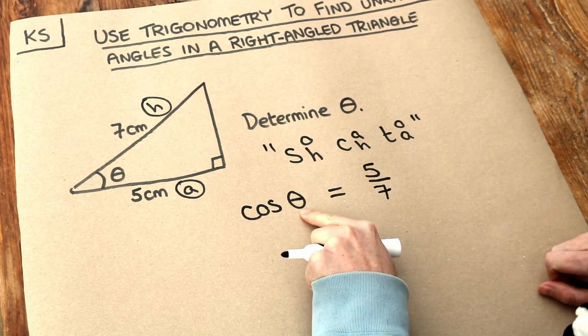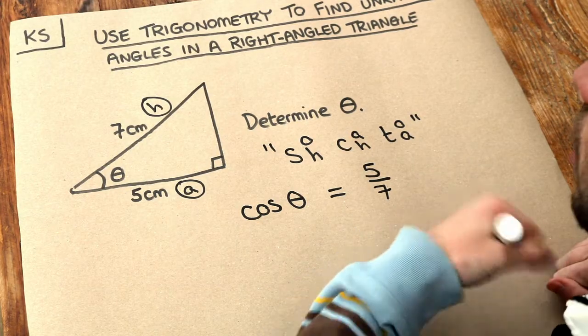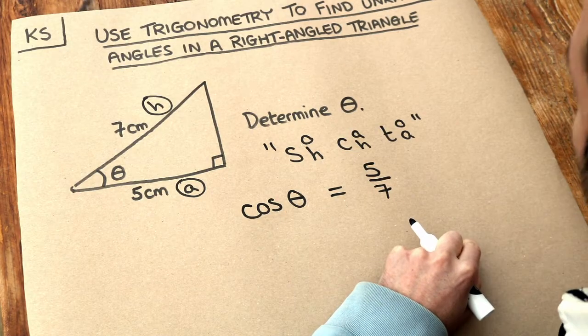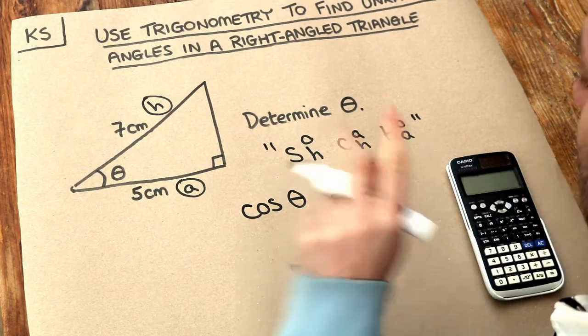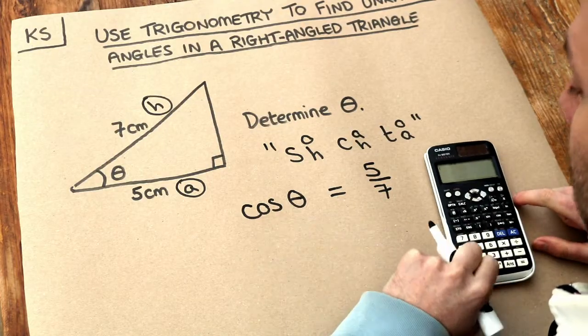Now to work out theta we need to get rid of that cos on the front. Usually we do the opposite of something to get rid of it in the equation. But what's the opposite of cos? Well actually there's a special function called inverse cos, and that enables us to get rid of the cos.